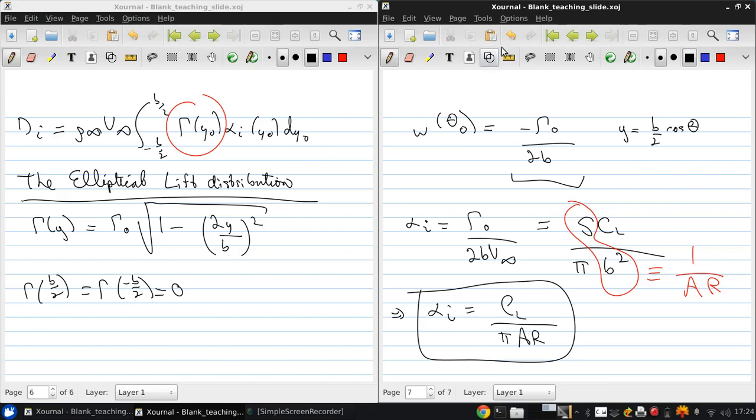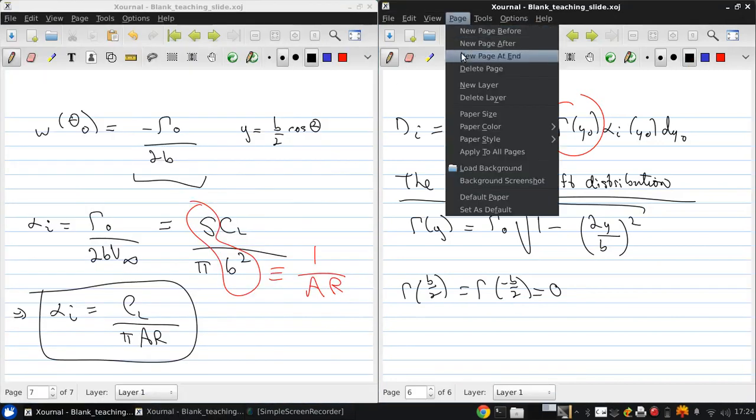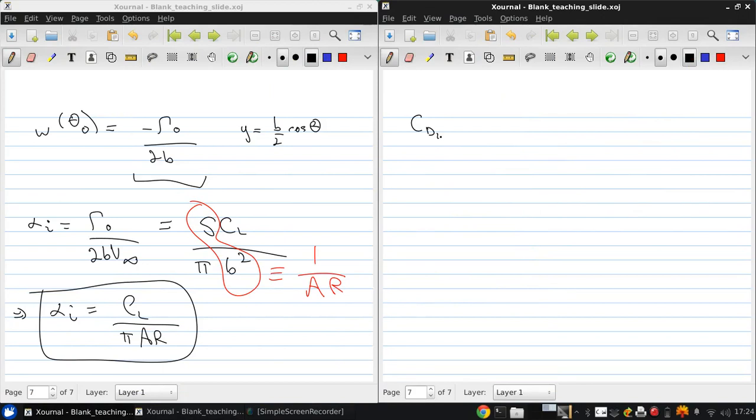And also, we can then get that the induced drag coefficient is CL squared over pi AR. So what we get from this is that the induced drag is proportional to the lift squared. So this clearly illustrates that the induced drag is due to lift.